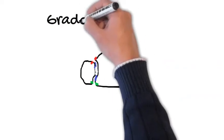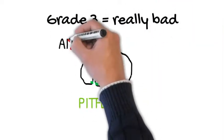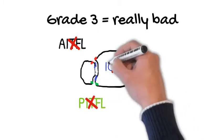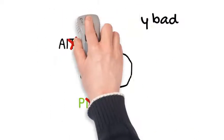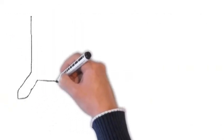A grade 3 injury goes through all three ligaments, and that's much worse. So you go through your AITFL, your PITFL at the back, and your interosseous ligament. And that definitely leads to some instability around your ankle and causes problems.